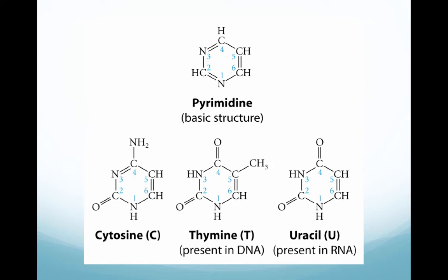Switching gears, let's talk about pyrimidines. The longer word is the smaller structure — a single-ring structure. The nucleotides that are pyrimidines are cytosine, thymine, and uracil. Thymine is present in DNA, and uracil is present in RNA.